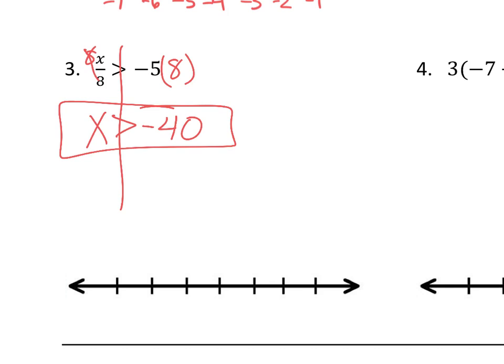x greater than negative 40 is our solution set. For the number line, put negative 40 in the middle: negative 39, negative 38, negative 37 to the right; negative 41, negative 42, negative 43 to the left. Do I put an open or closed circle around negative 40? Open — because it's greater than, no 'or equal to.' Greater than also tells me the shading direction — to the right. Anything in the shaded region counts as an answer. Does negative 40 itself count? No — it's open, not shaded in. Negative 39.9 would work — right up to 40, but not including 40.